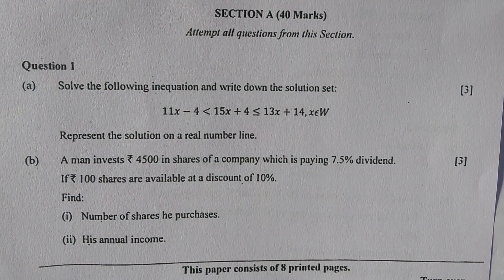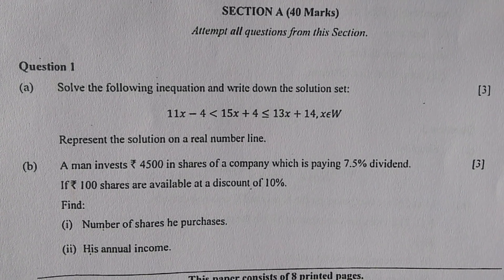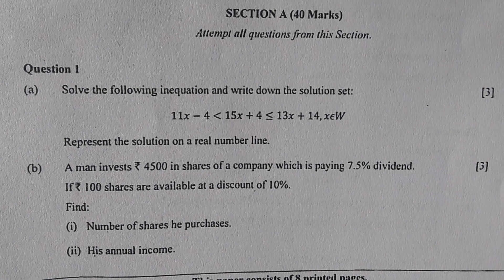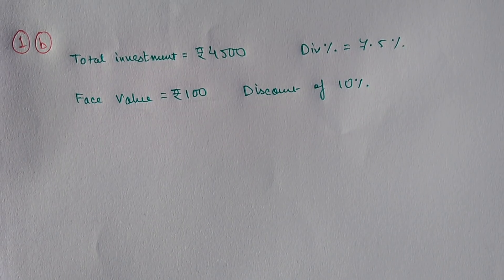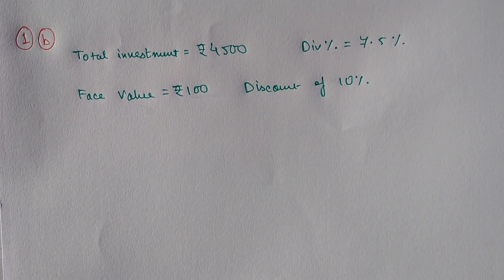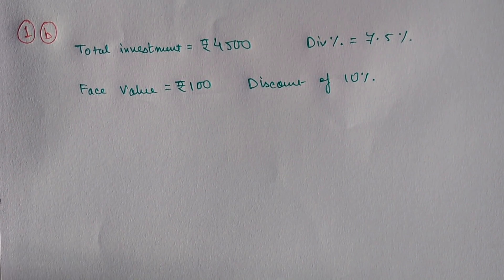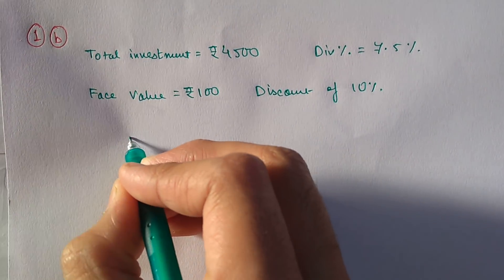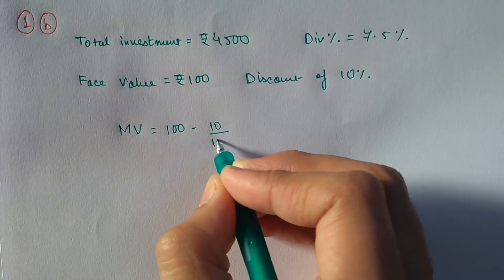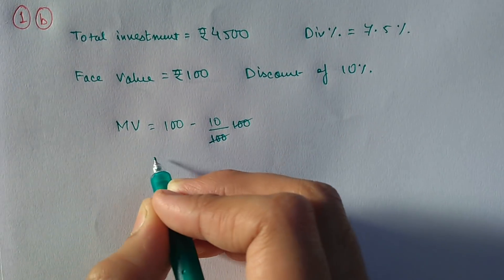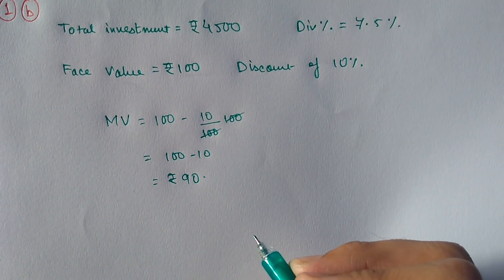Moving on to part B. A man invests Rs. 4,500 in shares of a company paying 7.5% dividend. Rs. 100 shares are available at a discount of 10%. Find: (1) number of shares purchased and (2) his annual income. Total investment is Rs. 4,500, dividend percent is 7.5%, face value is Rs. 100, and shares are at a 10% discount. The market value is face value minus 10% of face value: 100 minus 10 equals Rs. 90.